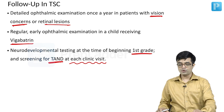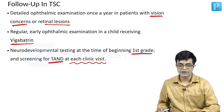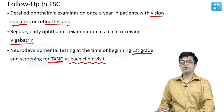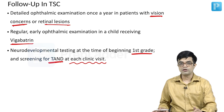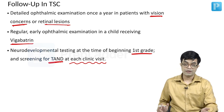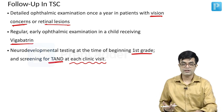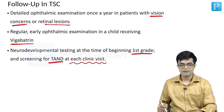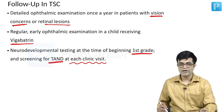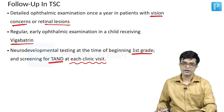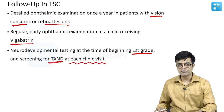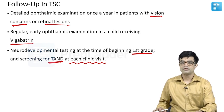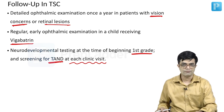In this Part 1 module of neurocutaneous syndromes, we covered the general approach, NF1, NF2 and their variants, and tuberous sclerosis in full detail. In Part 2, the remaining neurocutaneous lesions will be covered along with key points and one-liners to remember.